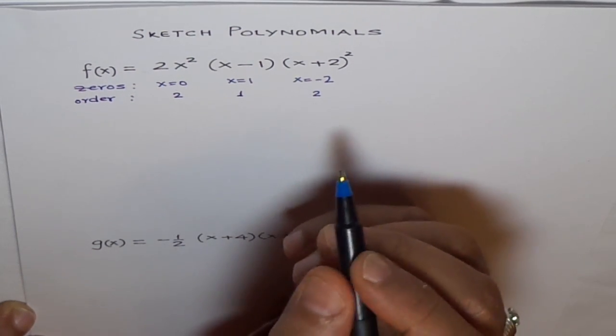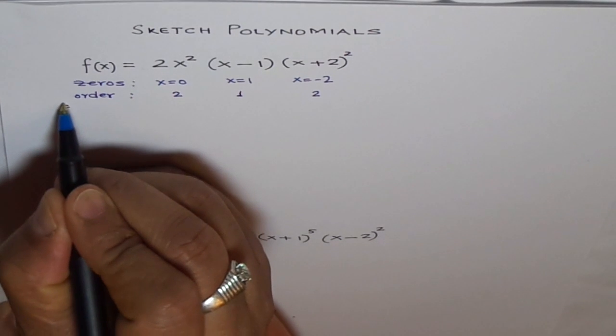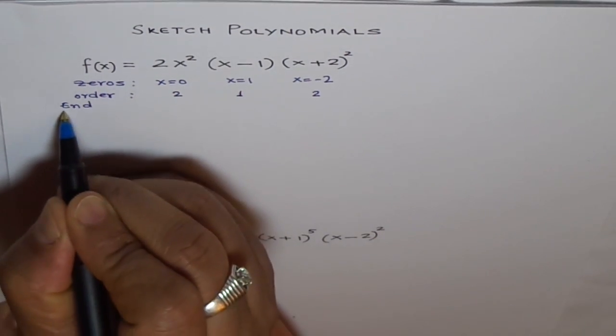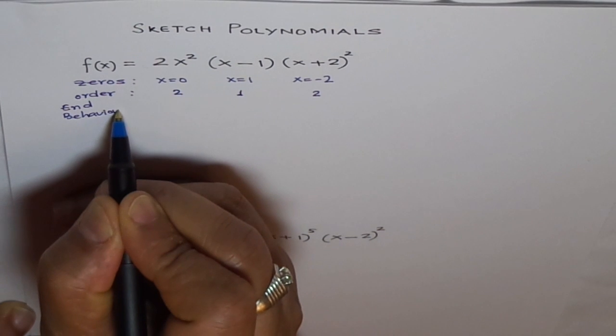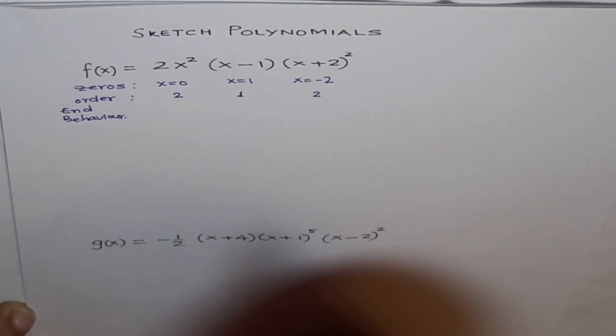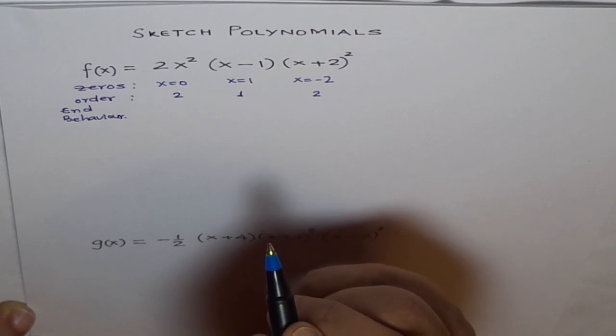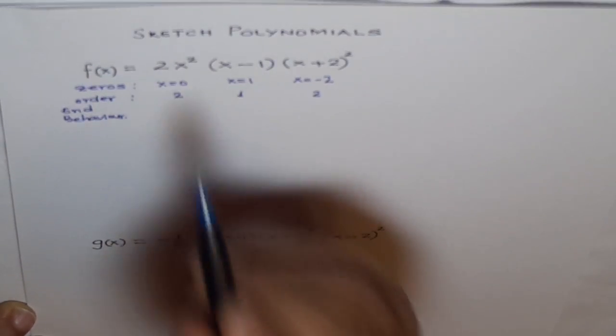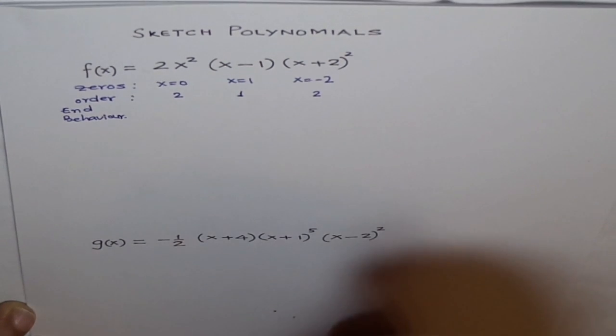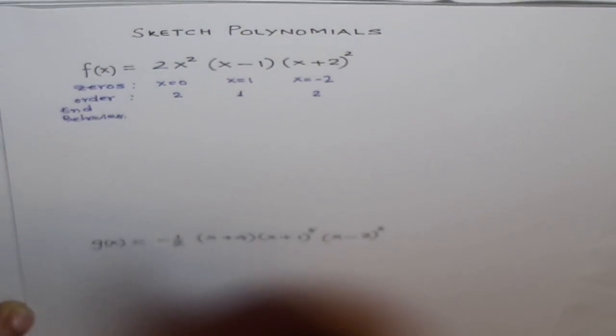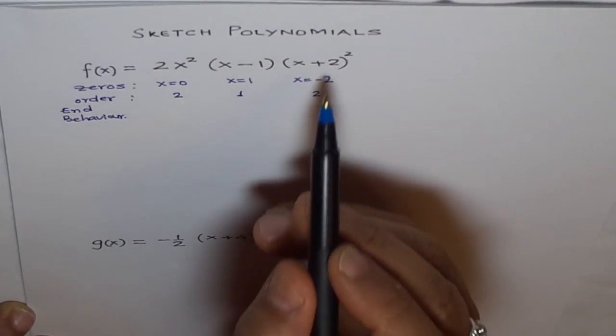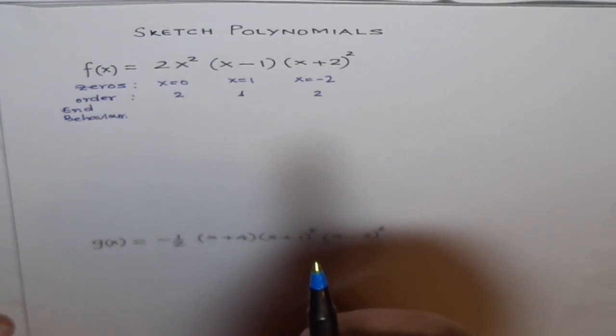Now, important thing to get is end behavior. How will you get end behavior? Which terms should you look for? The leading coefficient and the degree give you the end behavior. What is the degree of this polynomial? Degree is the highest power.